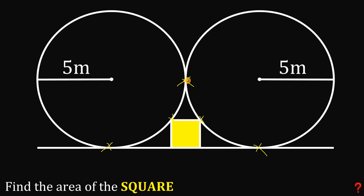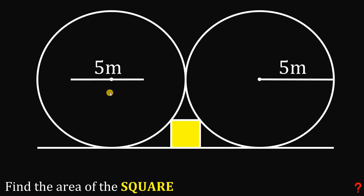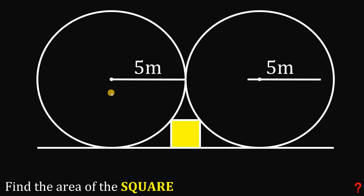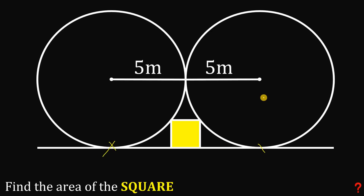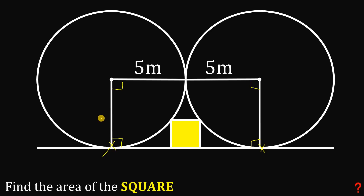Let's first talk about the point of tangency between the two circles, and move the radius to that point. Now let's draw the radius connected to the tangent segment — and technically we have a right angle there. Notice that we have a rectangle here with a length of 10 meters, and a width of 5 meters, which is the radius of the circle.